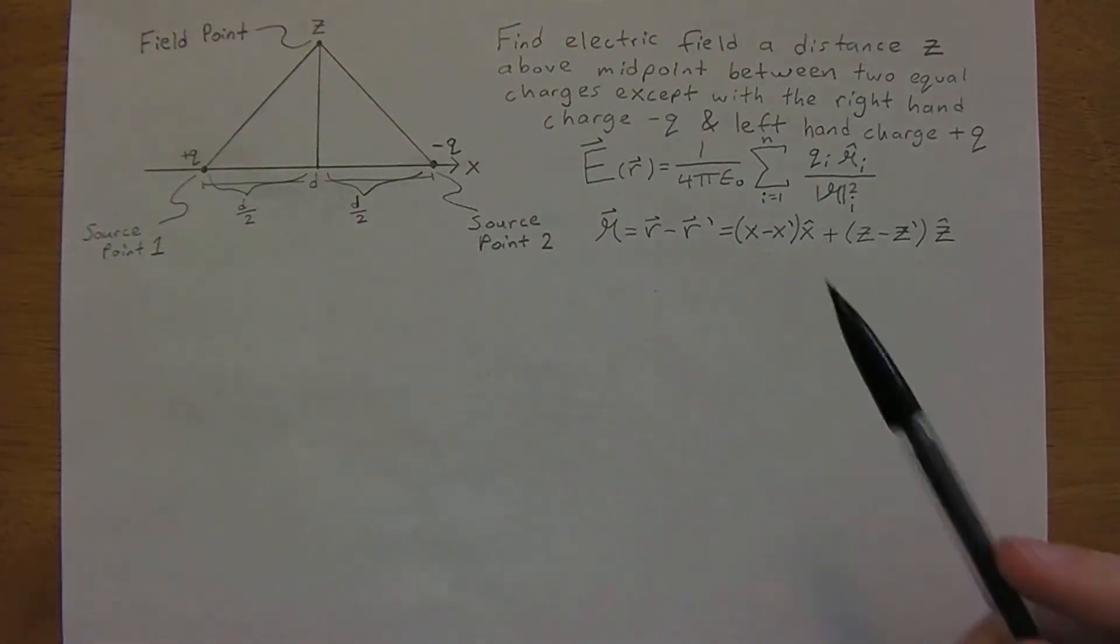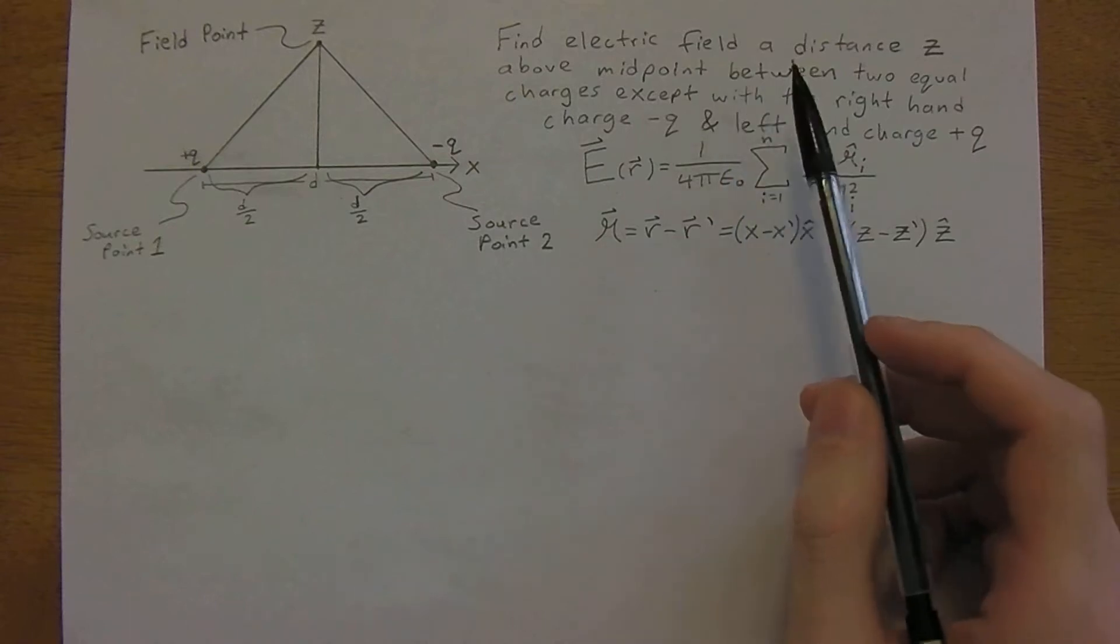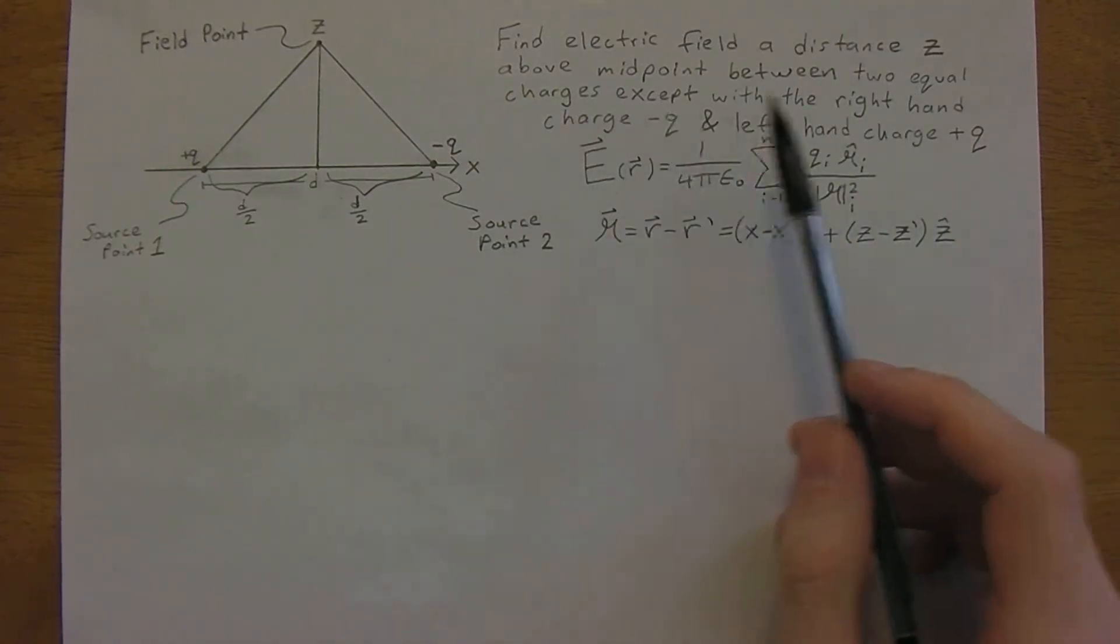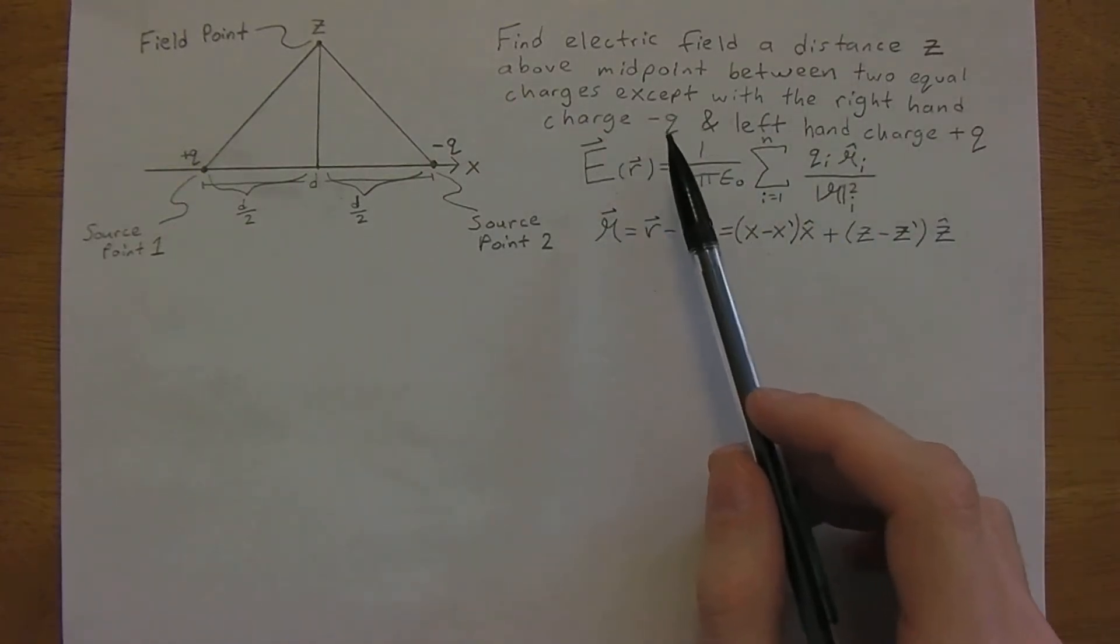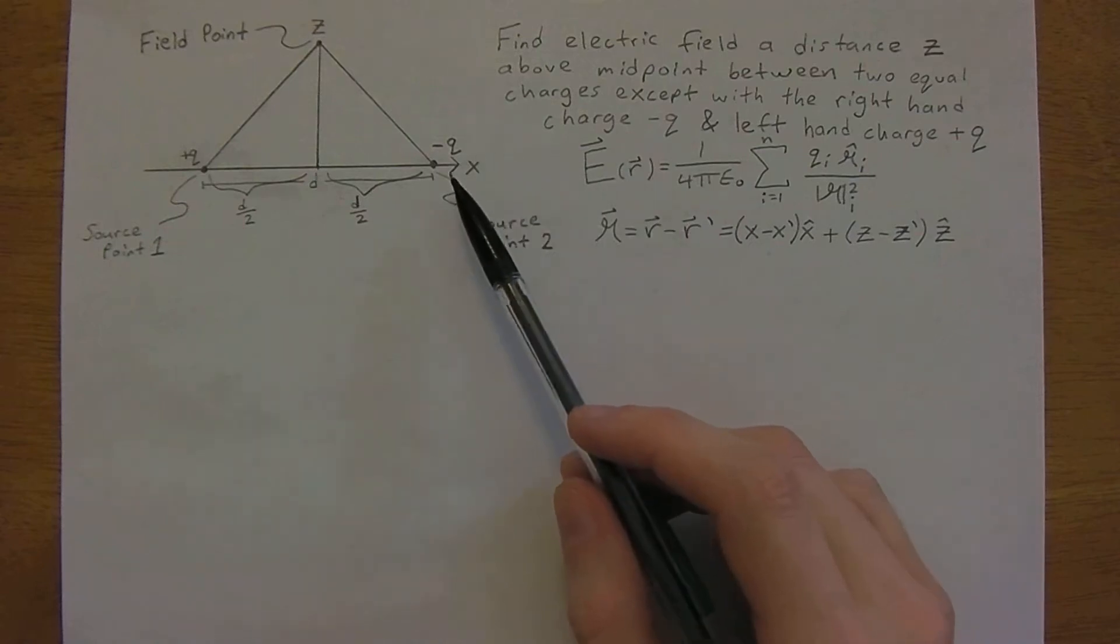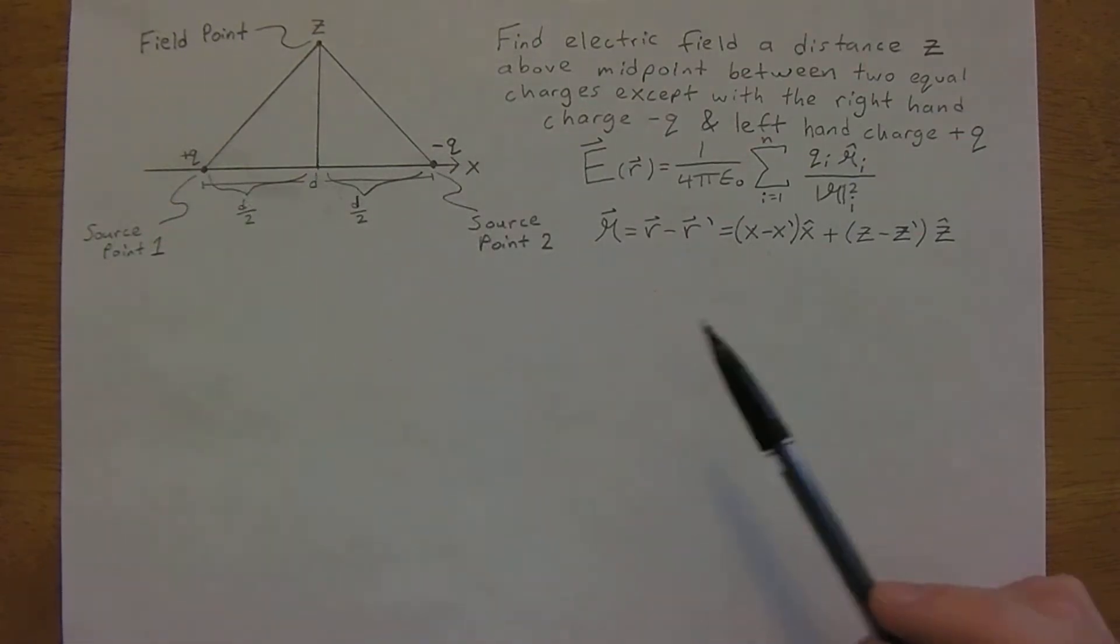So on part b now we are asked to find the electric field a distance z above the midpoint between two equal charges, except now we have the right hand side as a negative q and the left is a positive q.